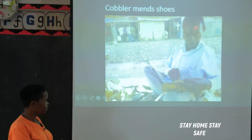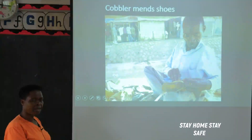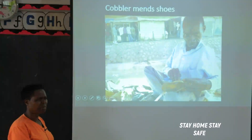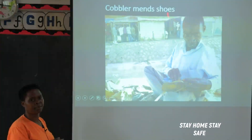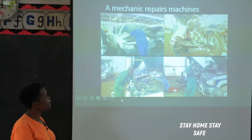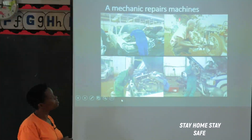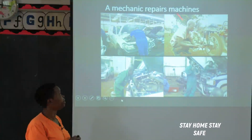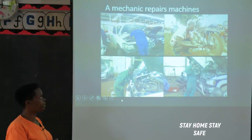Then we have the cobbler. He's here very happy, smiling — very busy mending shoes. The cobbler mends shoes. What does the cobbler do? A cobbler mends shoes — C-O-B-B-L-E-R. If someone asks you who mends shoes, say cobbler. Then we have the mechanic — they are here in the garage repairing different cars. A mechanic repairs machines. If you have any machine — a car, a bike — the mechanic's work is to repair the machines. If your machine is spoiled, don't cry, just go to the mechanic and repair it.